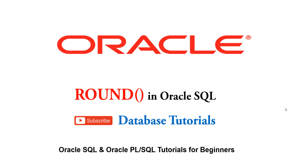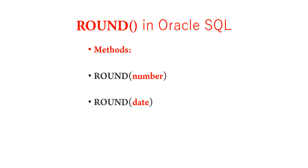Hello friends, welcome to the new session of Oracle SQL and PL/SQL tutorials for beginners. In this tutorial we are going to see the round-off function in Oracle SQL. In this round-off function we have two methods: the first method is round-off number, where we pass a number as input and get a number as output. The second method is round-off date, where we pass a date as input and get a date as output.